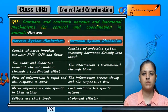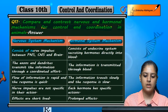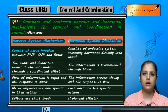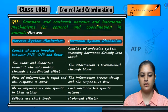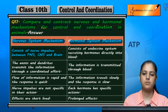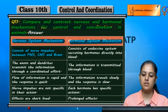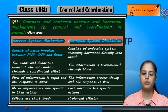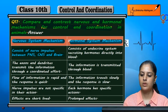The nervous system mechanism consists of nerve impulses between the peripheral nervous system, central nervous system, and brain. Nerve impulses are present in all of them.